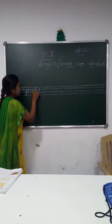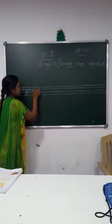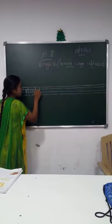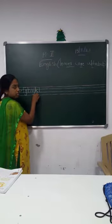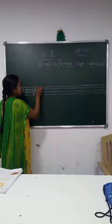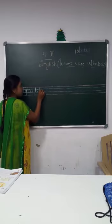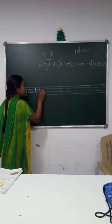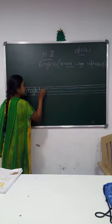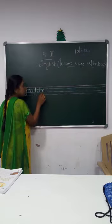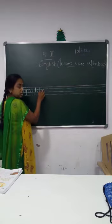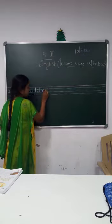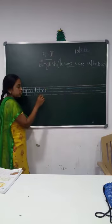Letter K: standing line, left curve, left sliding line, right sliding line. Letter L: standing line. Letter M: standing line, up curve, left curve, one more up curve, touch both the blue lines. Letter N: standing line, up curve.